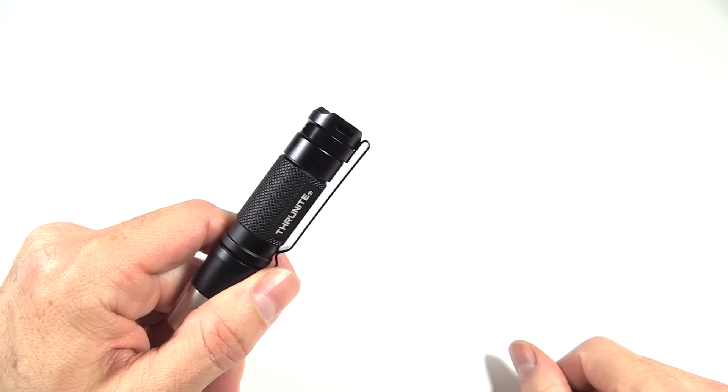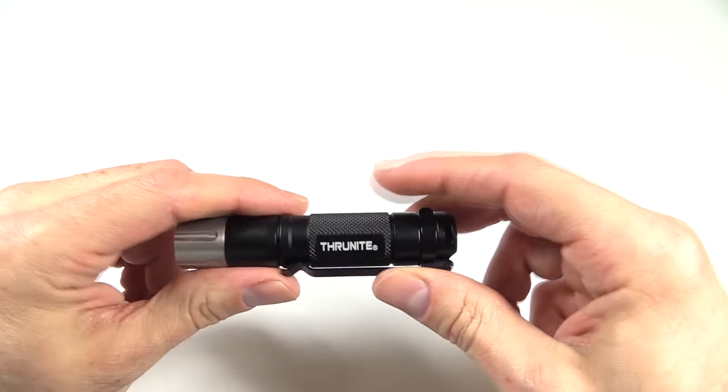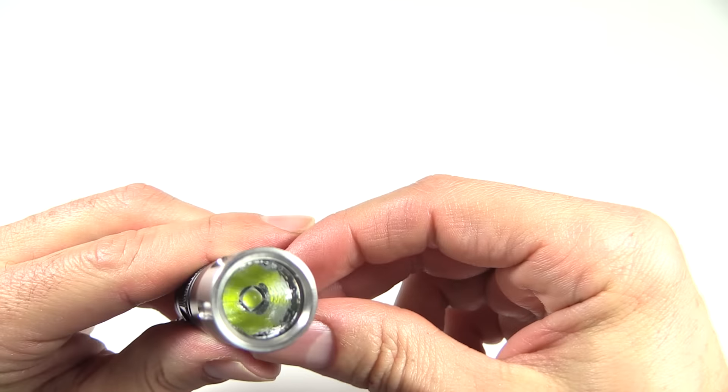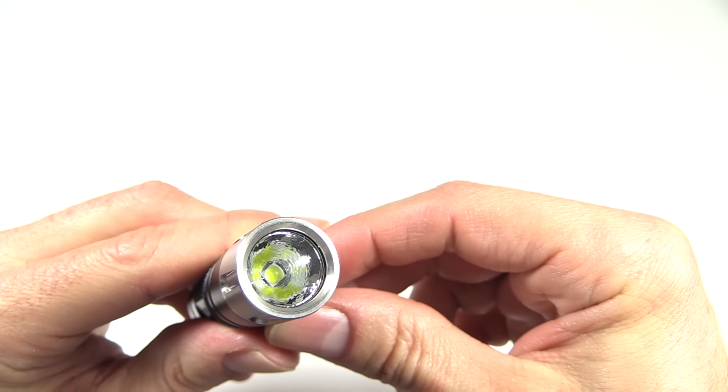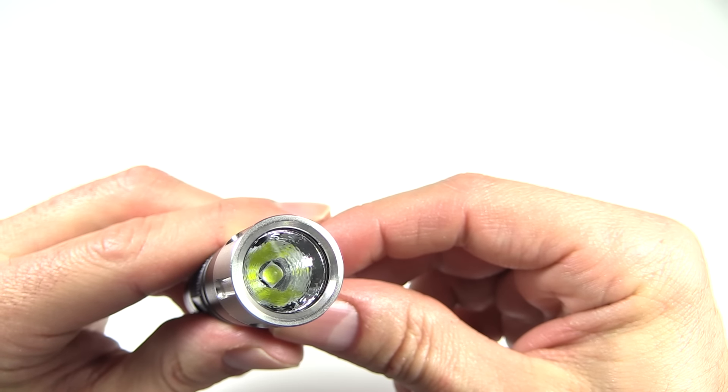However, this one is going to be a little bit more deep carry because you can see that goes all the way up to the top of the light there. On down the head, this has the new Cree XP-L V6 LED, which is a larger LED.